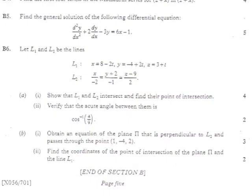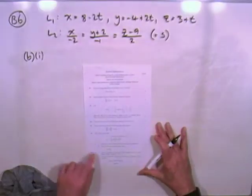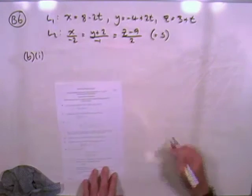Right, so part B now. Part 1, get the equation of a plane. Well, that just means you need a point on it and a perpendicular direction, which you've got, line 2. And then part 2, see where line 1 cuts through it. Well, that'll be easy. Just feed the coordinates into its equation.